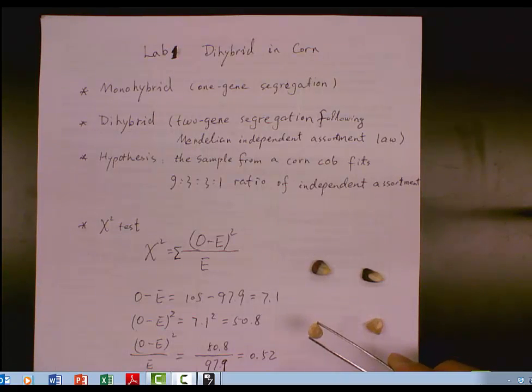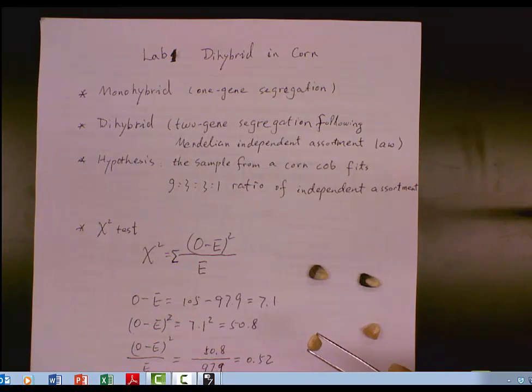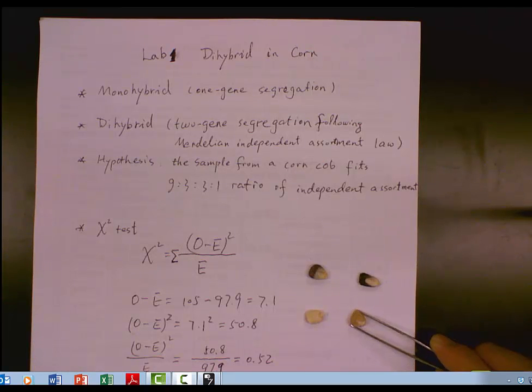And the third one is colorless. And the dent we see is happening at the top, the colorless. The fourth one is colorless and shrinking. The kernel collapses at four sides and at the top called shrinking. This is colorless.